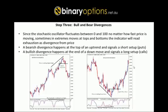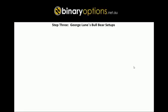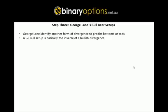This is not the only divergence setup we can find. We also have George Lane's bull and bear setup. George Lane identified another form of divergence to predict bottoms and tops. If we monitor six currency pairs and two stocks we will definitely find enough setups to keep us occupied during our trading session. A George Lane bull setup is basically the inverse of a bullish divergence.